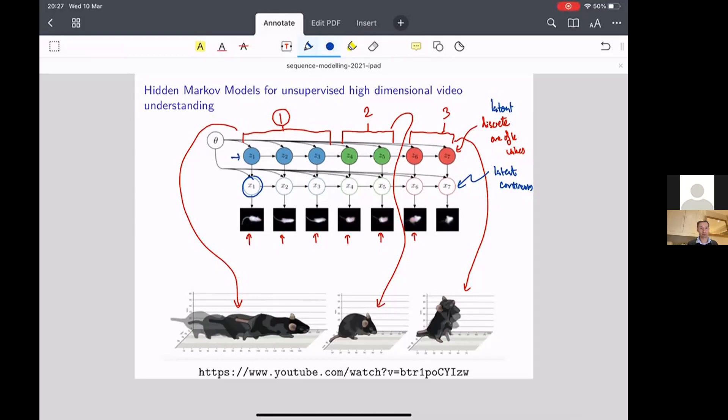So the configuration essentially of the rat, which is encoded by the X's, is basically going to encode the pose of the animal. I think I'm interchanging rat and mouse here.